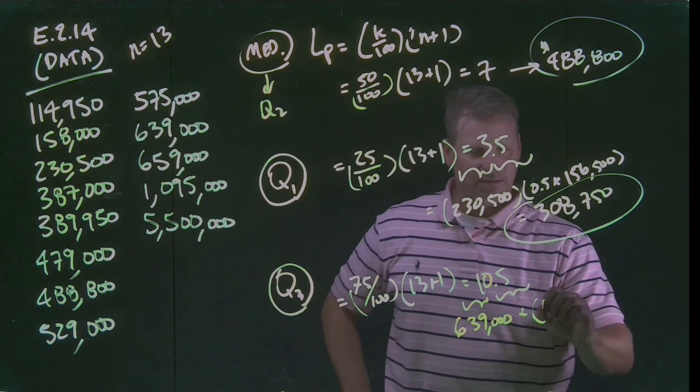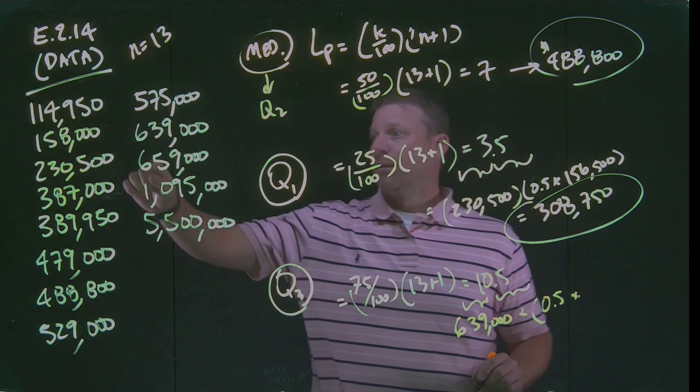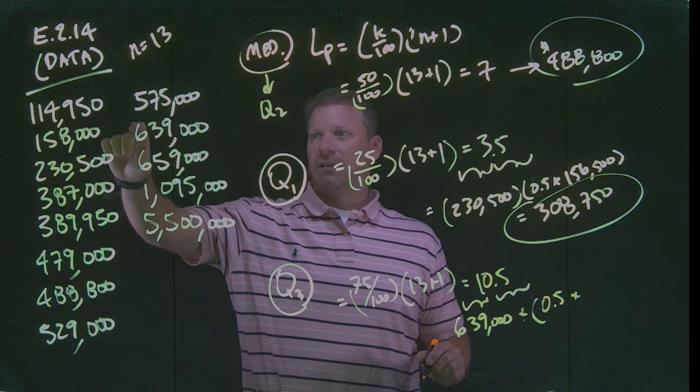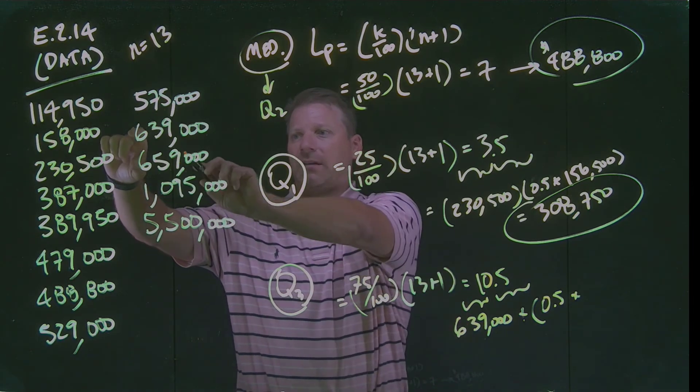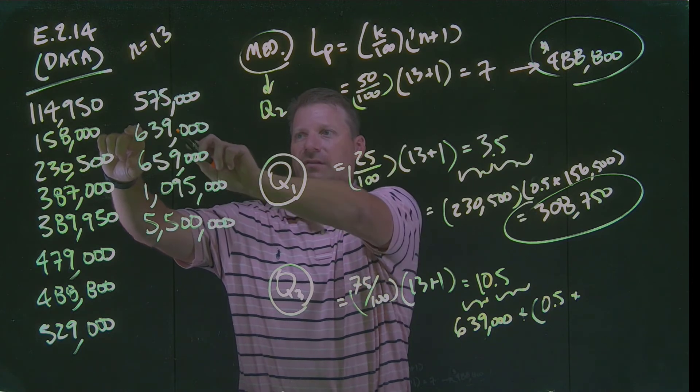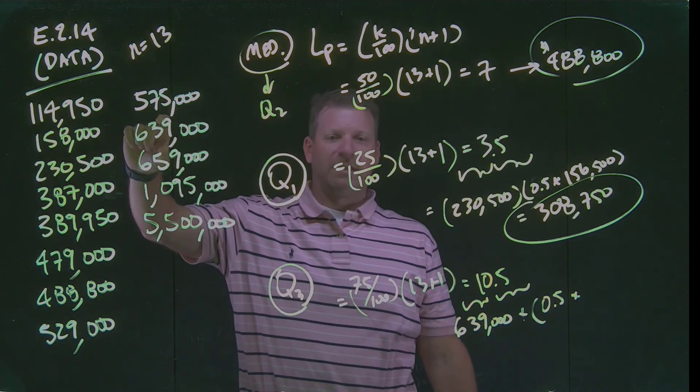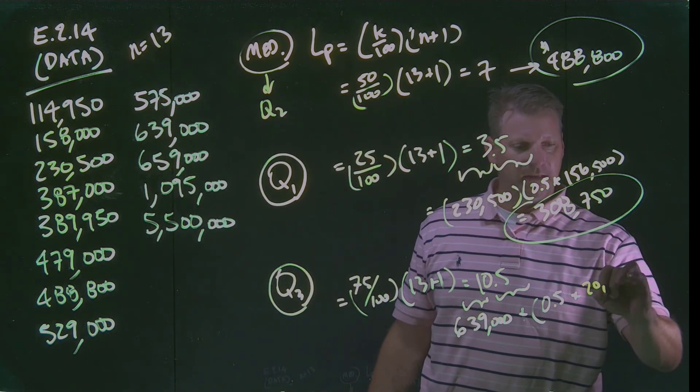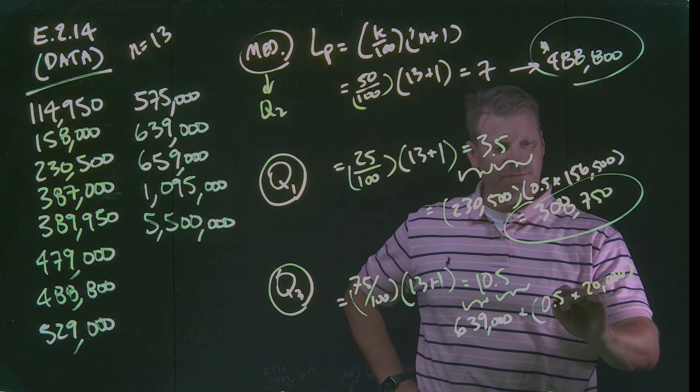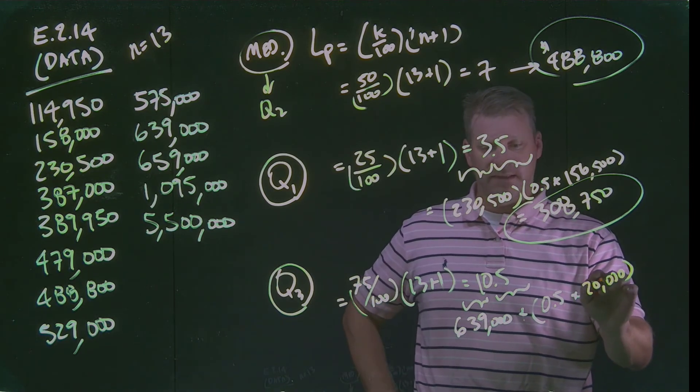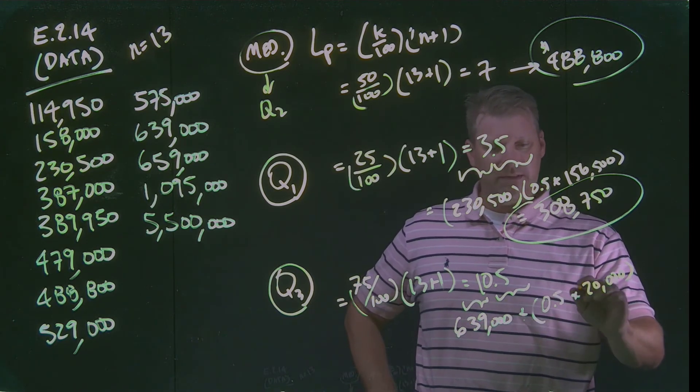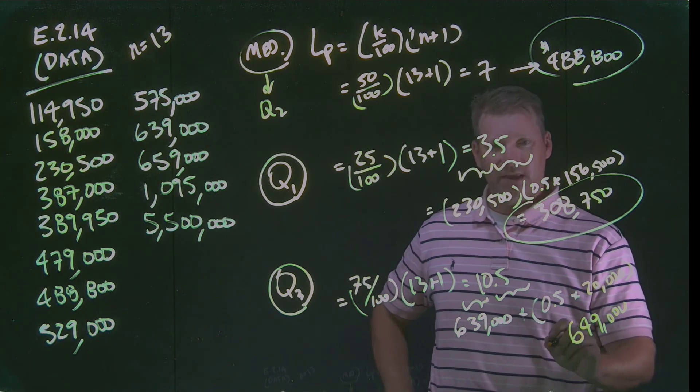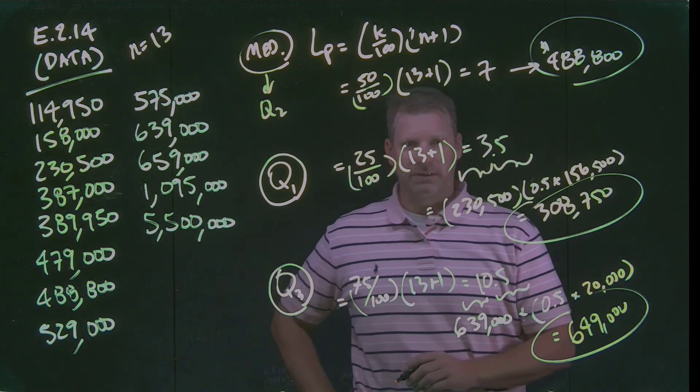Plus I've got to, in this case, go half of the distance between the 10th and the 11th data point. If I look at the distance between the 10th and the 11th data point, so I'm taking the $659,000 from the $639,000, I've got a distance there of $20,000. That $20,000, then, is what I'm multiplying times one half. If I take that half of $20,000, I've got $10,000. $639,000 plus $10,000 gets me to $649,000. And that, then, is the location of my third quartile boundary.